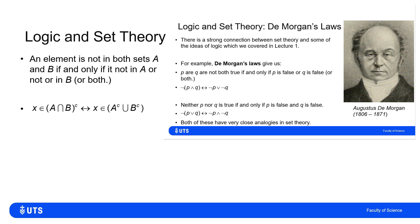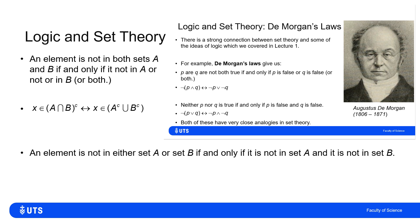Similarly, for the second law, an element is not in either A or B if and only if it's not in A and it's not in B. So in set notation, X belongs to the complement of (A union B) if and only if X belongs to A-complement intersection B-complement.